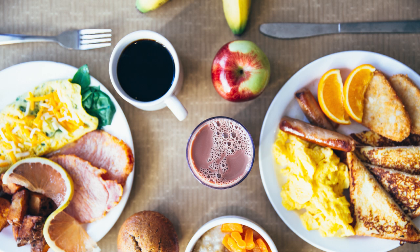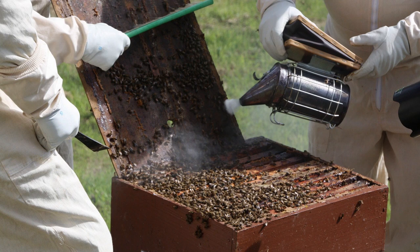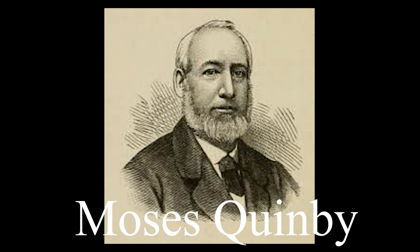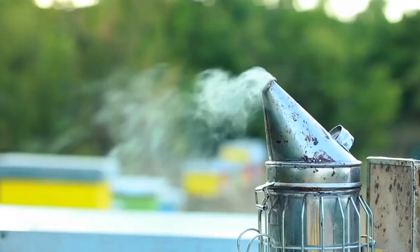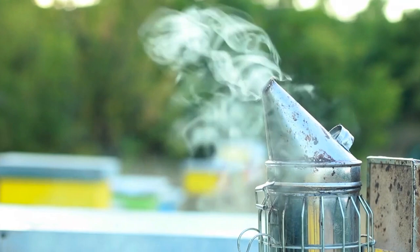The extraction of honey is mostly done by using a bee smoker. Moses Quinby, an American beekeeper, invented the bee smoker. The main working of this device is to calm down bees if they get aggressive to their predators, like us. This is done by smoldering various fuels — hence we get the name bee smoker — for producing smoke.